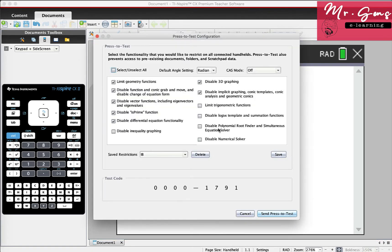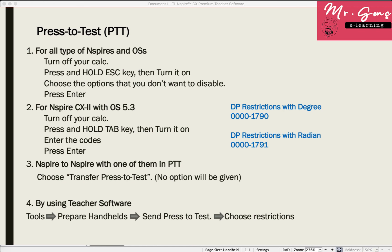As I showed you, Lists and Inequality are allowed in IB. I keep my default setting as Radian. You can also save the profile. I save it as IB. Then click on Send Press to Test. Thanks for watching. Please don't forget to subscribe.